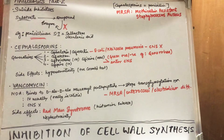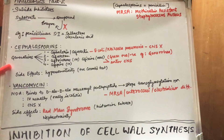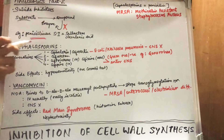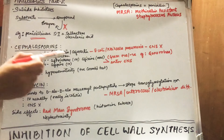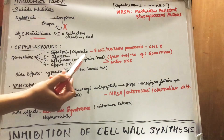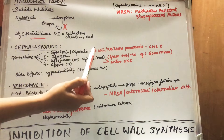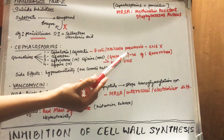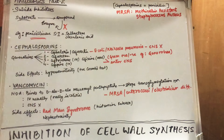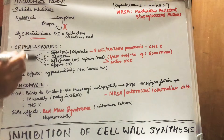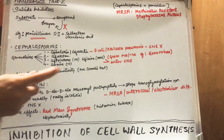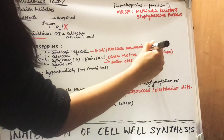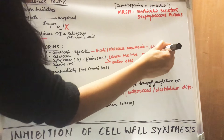Cephalosporins and penicillin have the same mechanism of action and almost similar side effects. Cephalosporins have four generations: first, second, third, and fourth. First generation examples are cephalexin and cefazolin, used against organisms such as E. coli, Klebsiella, and pneumonia. An important point: first and second generation drugs do not enter the central nervous system.